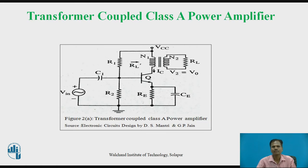Now let us consider the second type of class A power amplifier — the transformer-coupled class A power amplifier. In this amplifier, the output load with load resistance RL is not directly connected to the collector circuit of the transistor; it is connected by means of a transformer. The transformer primary winding is connected in the collector circuit of the transistor, and the output load with load resistance RL is connected to the secondary winding of the transformer. Due to transformer action, the current and voltage swing in the collector circuit are transformed to the secondary winding and delivered to the load resistance RL.